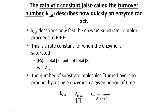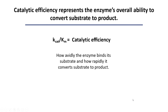Kcat refers to the number of substrate molecules turned over into product by a single enzyme in a certain period of time. We measure kcat as a property of Vmax, because Vmax is the point at which all enzymes are bound to substrate. The ability of an enzyme to turn over product depends on how much enzyme is present as a function of Vmax. Because these two things are related: if we drop enzyme concentration, Vmax will come down; if we increase enzyme concentration, Vmax will go up. In both situations, kcat will stay the same, because kcat is equal to Vmax divided by total enzyme concentration.